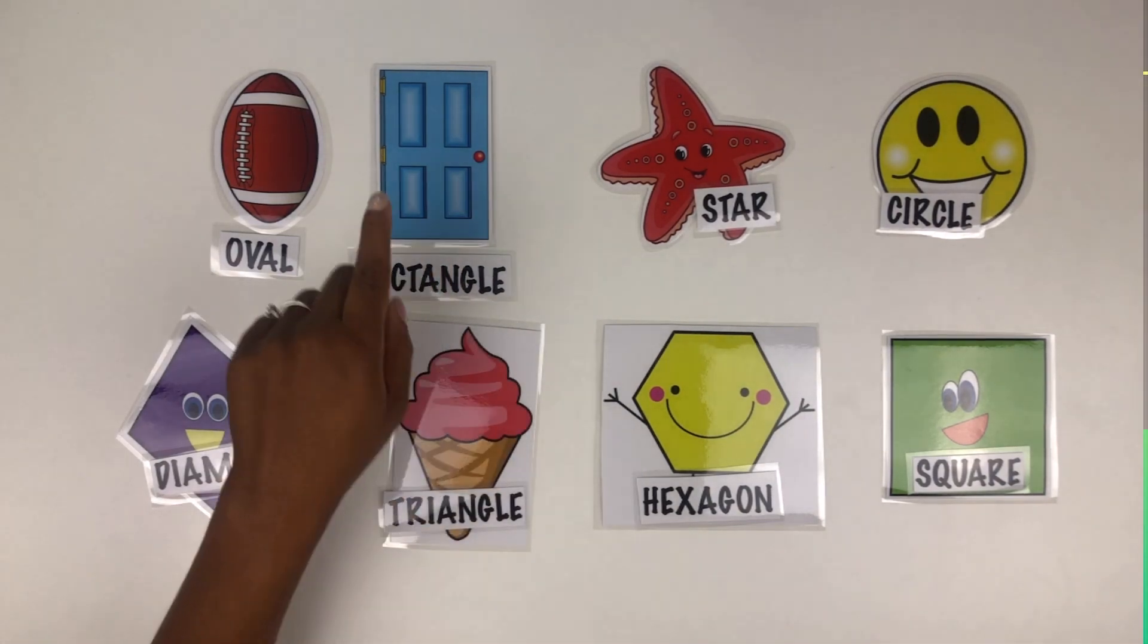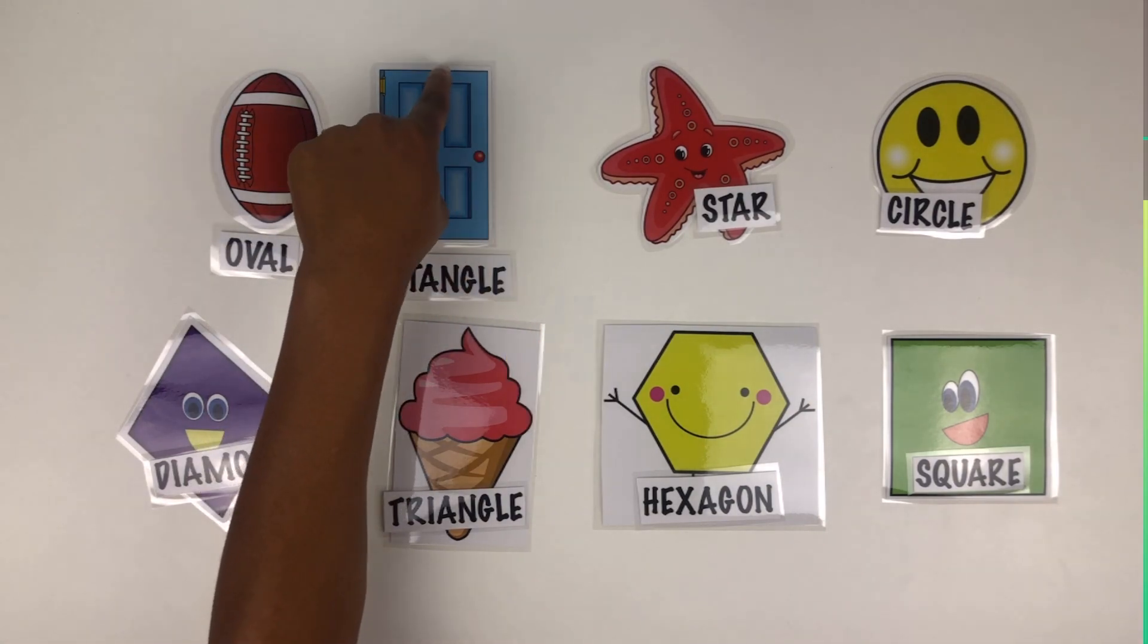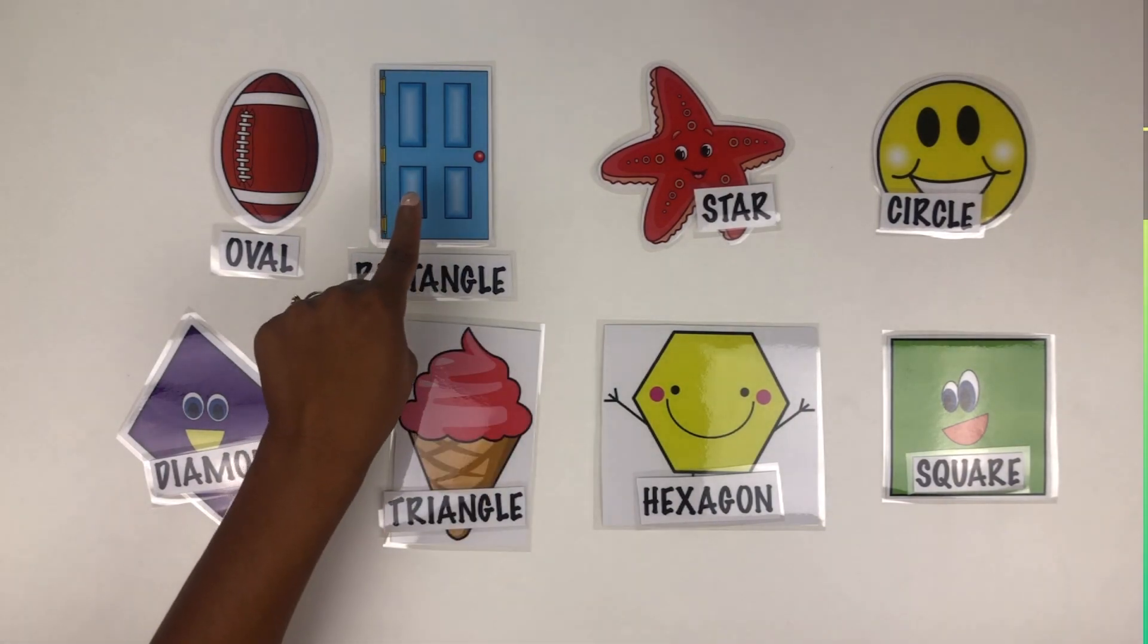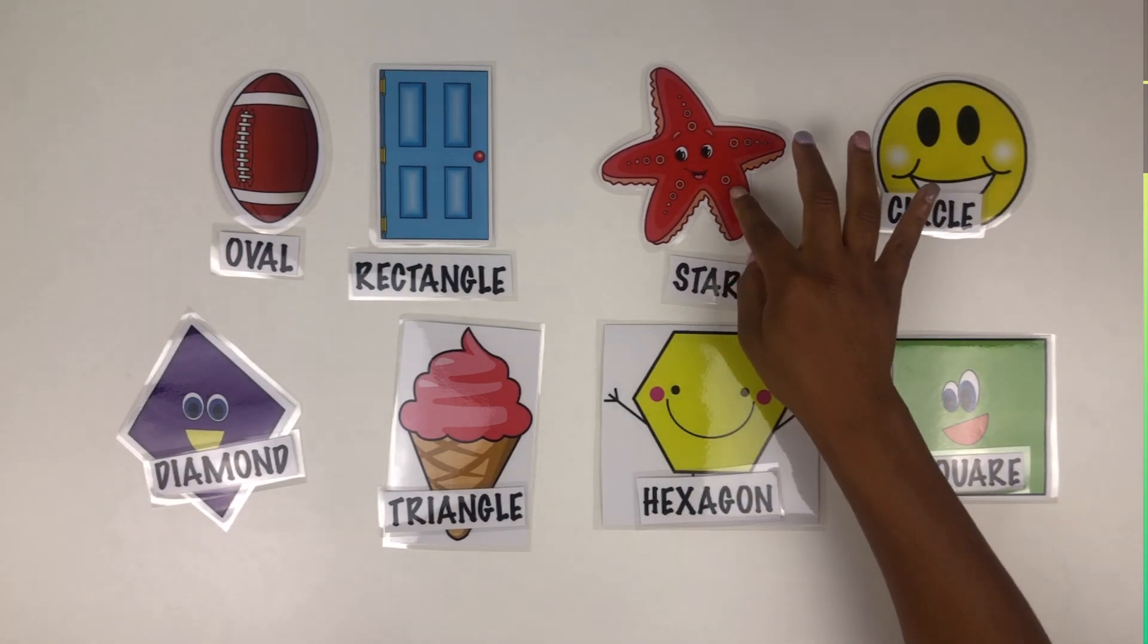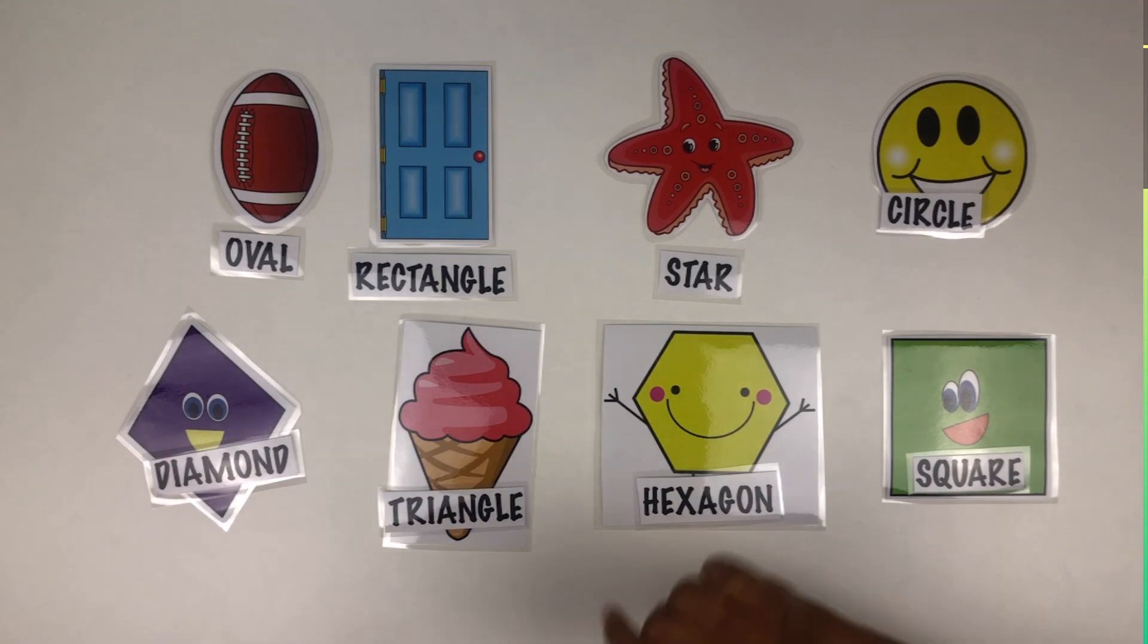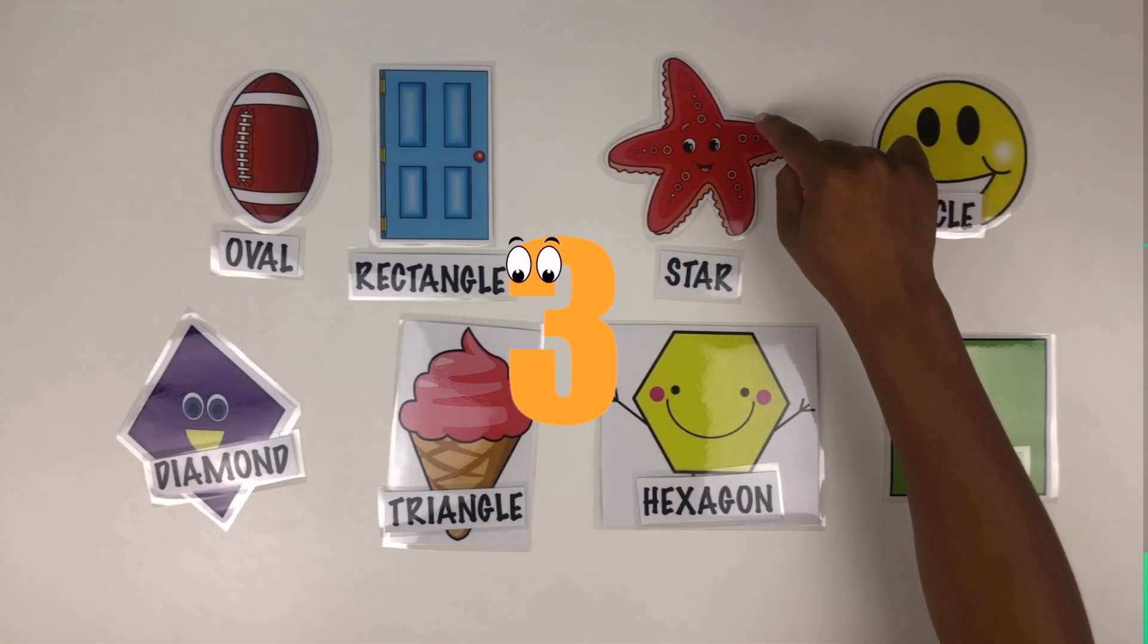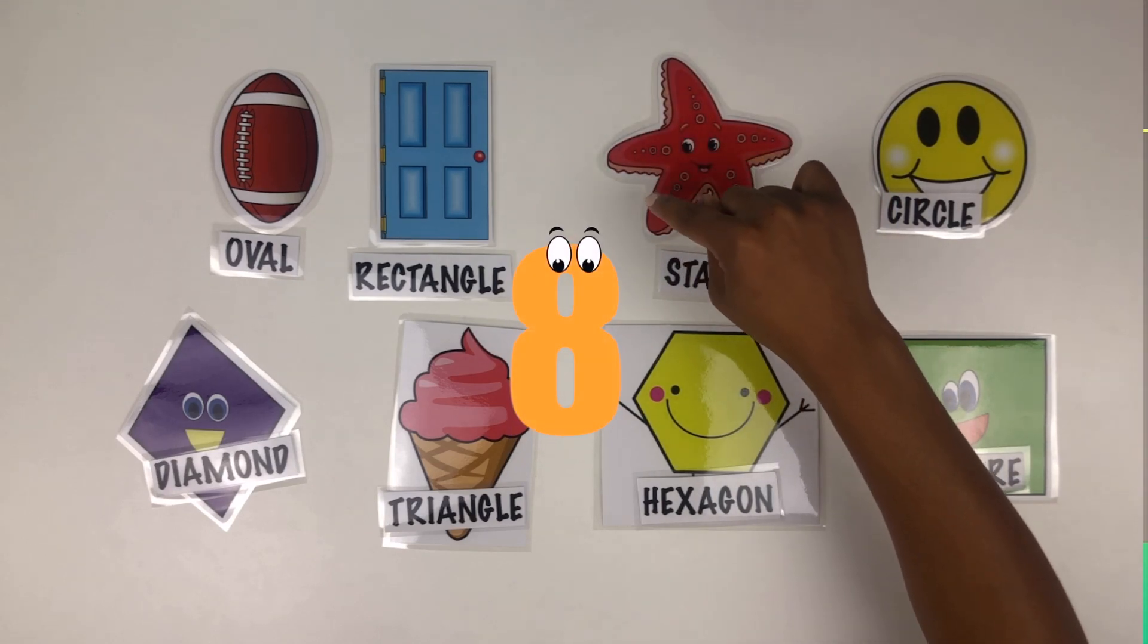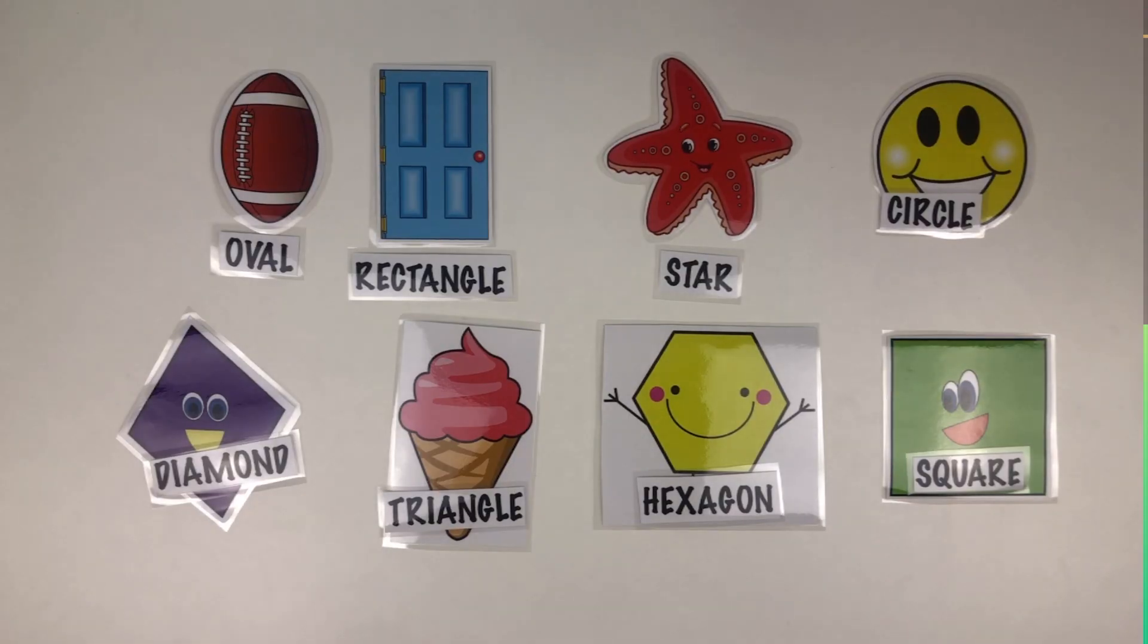How about a star? How many sides does a star have? Let's count: one, two, three, four, five, six, seven, eight, nine, ten. So a star has ten sides.